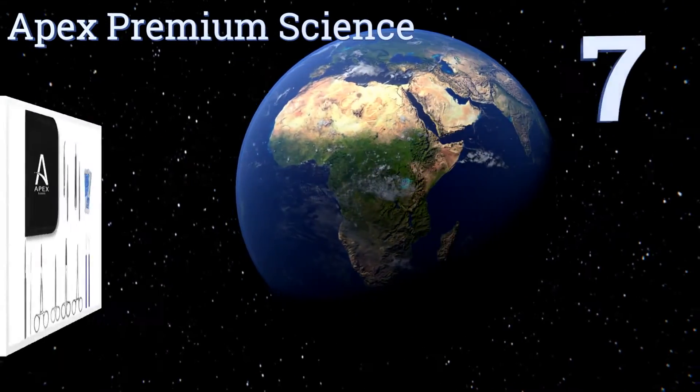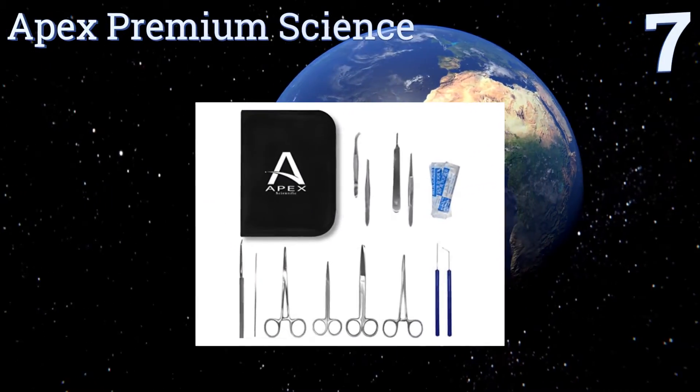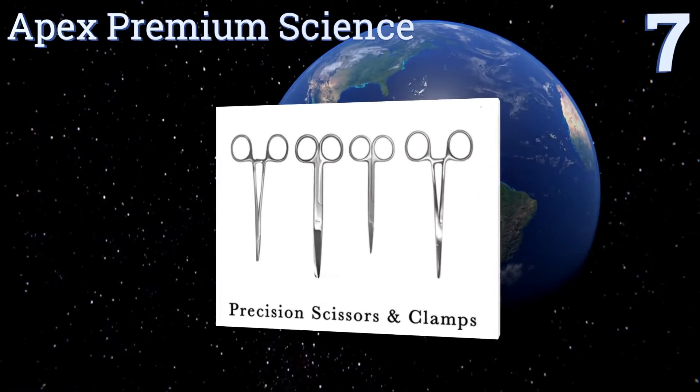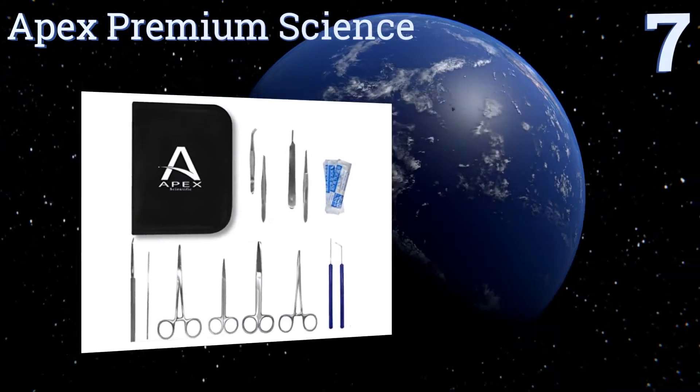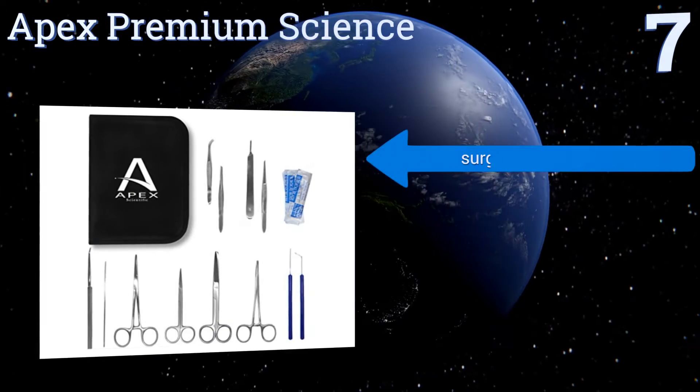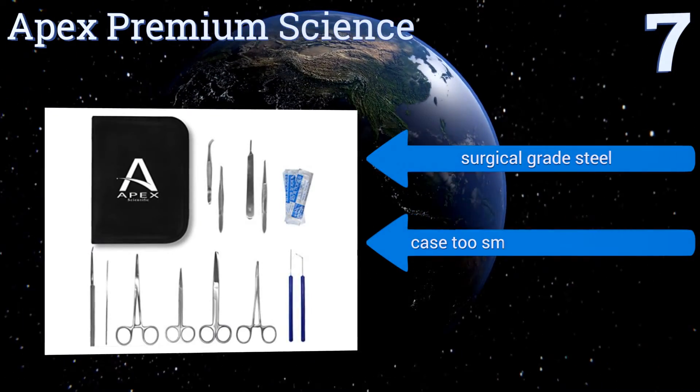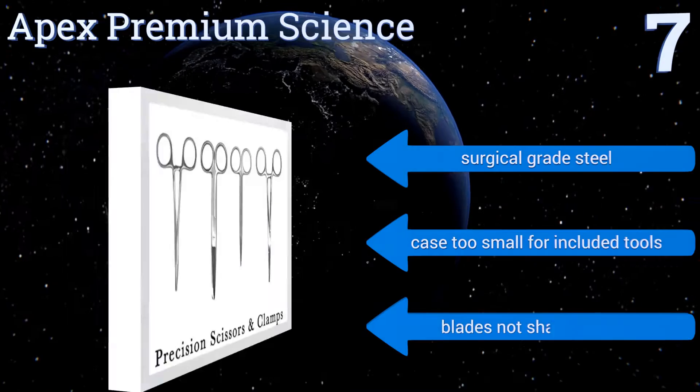Starting off our list at number 7, this Apex Premium Science Kit contains all of the tools needed for most classroom dissections. It also comes with an included e-book that gives instructions on proper instrument use and that can help students and teachers alike learn about lab work.